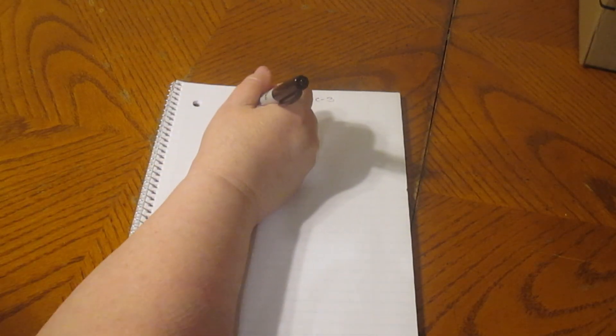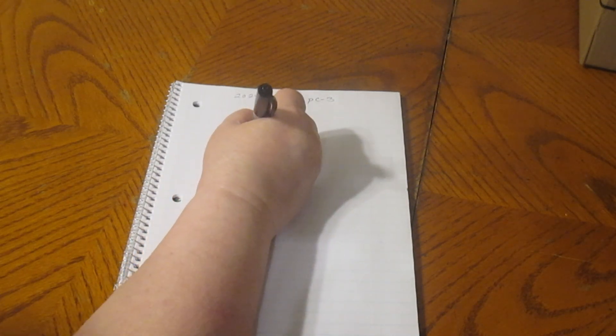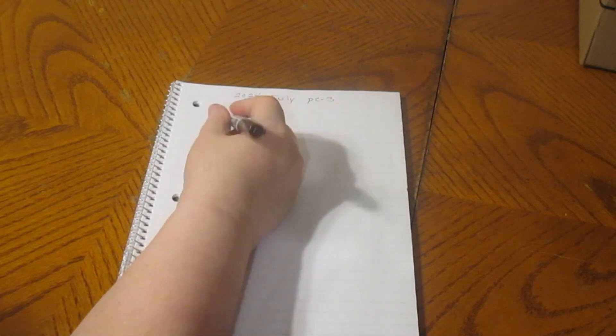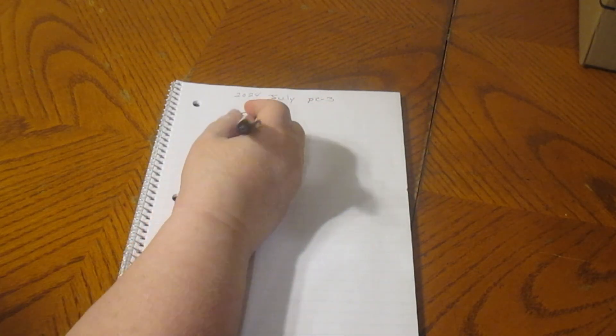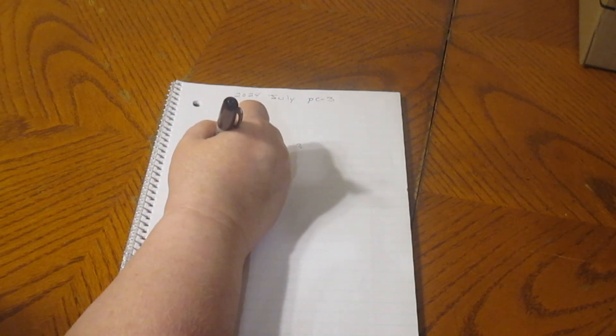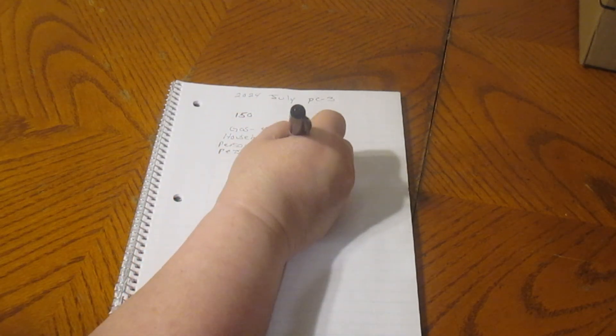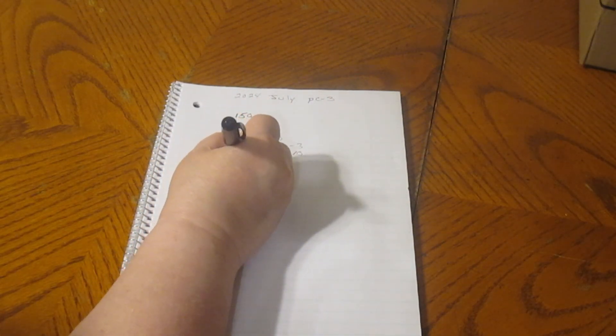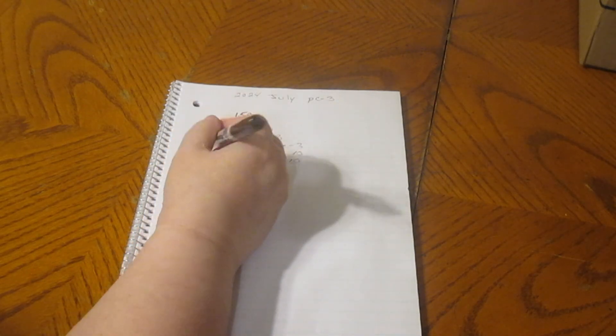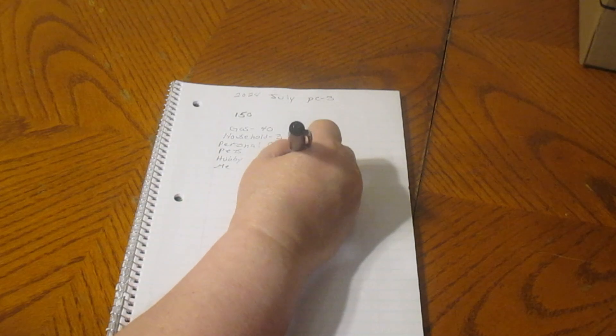So we have $150 and then we're going to do gas for $40. Household is going to get $3. Personal care is going to get $3. Pets is going to get $10. Hubby is going to get $10. And me, I will get $10.